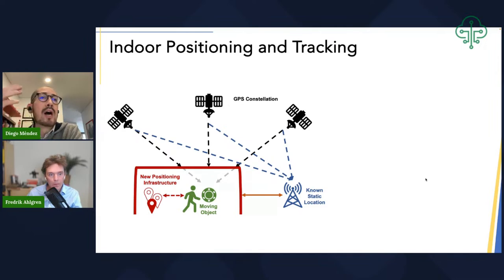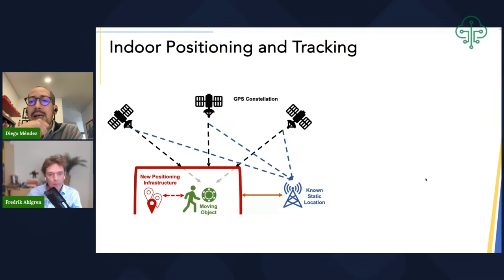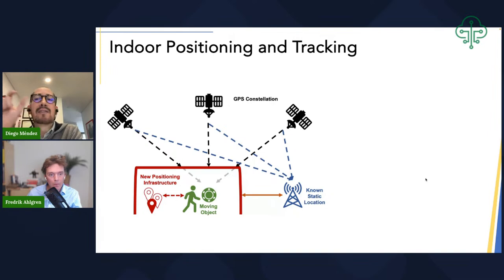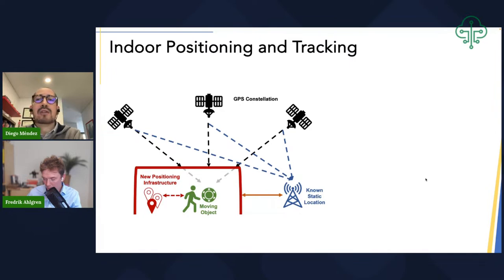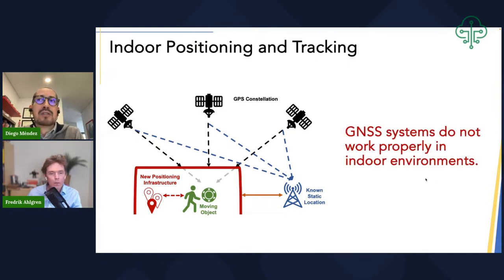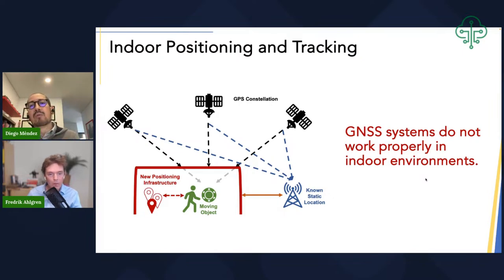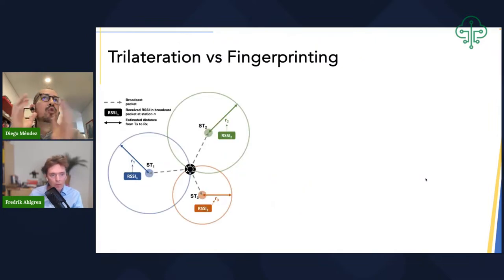For outdoor positioning, GPS works well. But the problem in indoor cases is that the GPS signal strength is not enough to penetrate building structures. The receiver detects even fewer satellites — if any — so you're not able to compute a good estimate of location. You cannot use the GNSS approach for indoor applications. A new positioning infrastructure is required to track devices in indoor scenarios using beacons or access points.